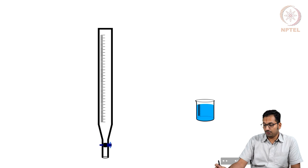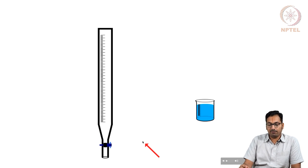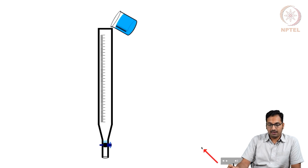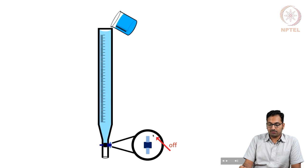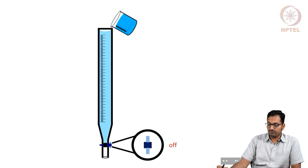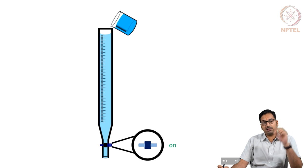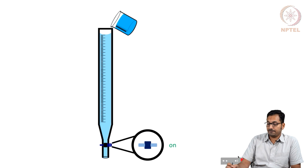Now let us take a quick look at how this experiment will be performed. You are looking at a burette here where the distilled water is carefully added. Ensure that the burette is open so as to fill the bottom portion of it, which will ensure that no systematic errors come into place. If you are not filling this part, you will definitely introduce a certain constant error across each of your measurements.